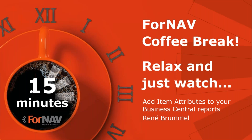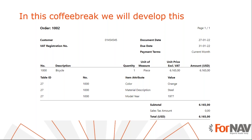Hi and welcome to this ForNav coffee break. My name is René Brummel, I'm a product specialist at ForNav and I will be your presenter today. As this coffee break is live, you can ask your questions in the GoToWebinar question window and we will answer them at the end. Today we're going to look at adding item attributes to your Business Central report. You can add item attributes to any report in any extension using the instructions from this coffee break.